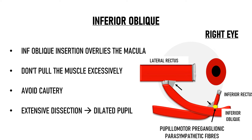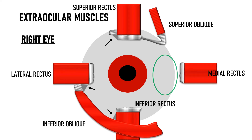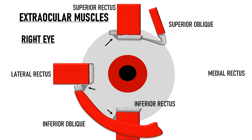If we look at all 6 extraocular muscles together, the superior rectus is connected to the superior oblique, and the inferior rectus and lateral rectus are both connected to the inferior oblique by connective tissue septa. The only rectus muscle without a nearby oblique is the medial rectus. Therefore, during medial rectus surgery, if a suture breaks or the muscle snaps, it retracts into the orbit with no attachments to catch it, making retrieval impossible.